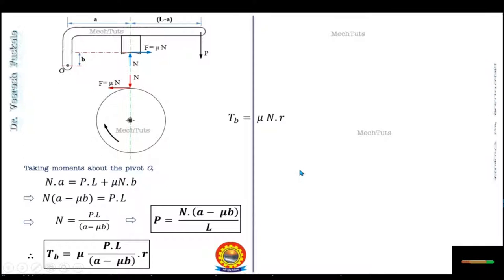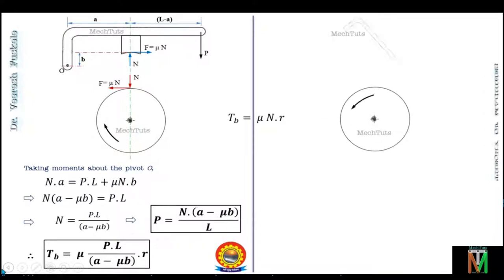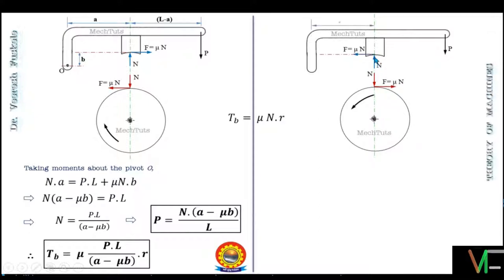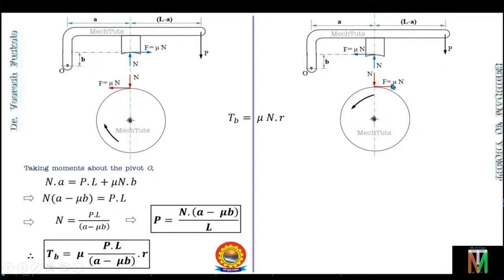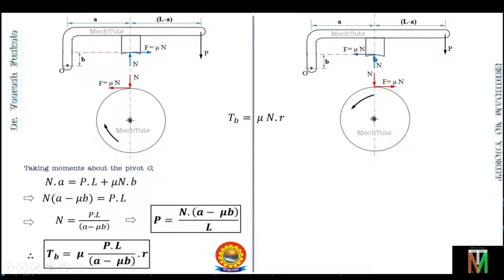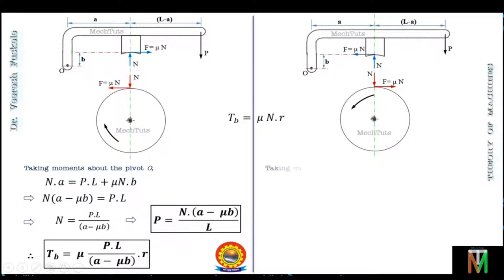Now consider the case when the drum rotates in the anticlockwise direction with the fulcrum point below the line of action of the friction force. The drum rotates anticlockwise, so the velocity of the drum is towards the left, meaning the friction force acts towards the right on the drum. The friction force on the block acts towards the left — opposite to that on the drum. The fulcrum point is below the line of action of the friction force, and the forces on the lever are N, F, and P.